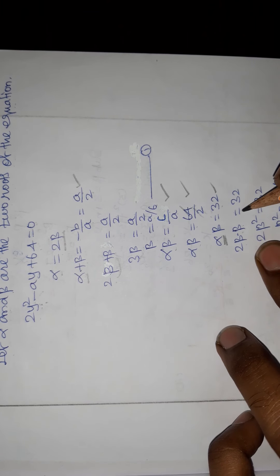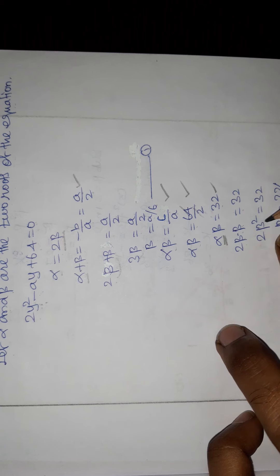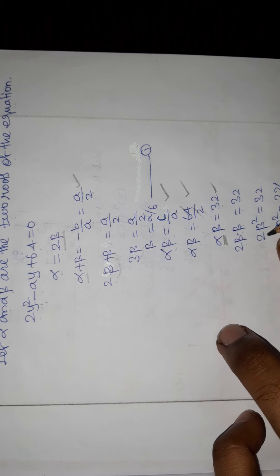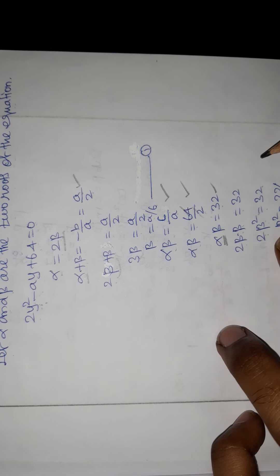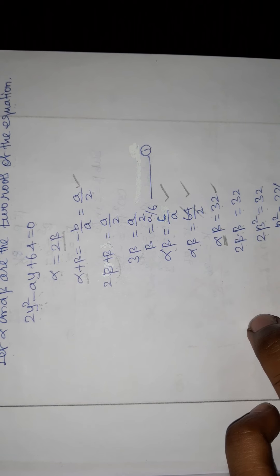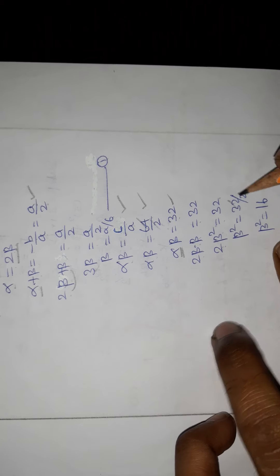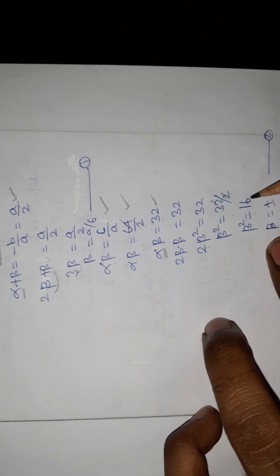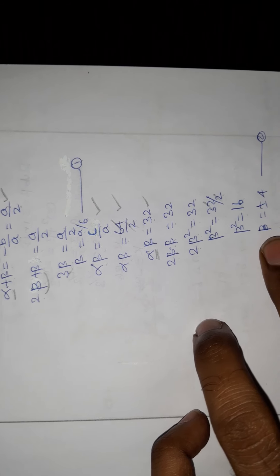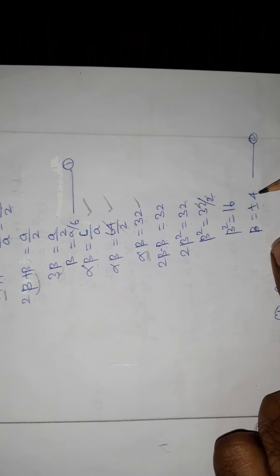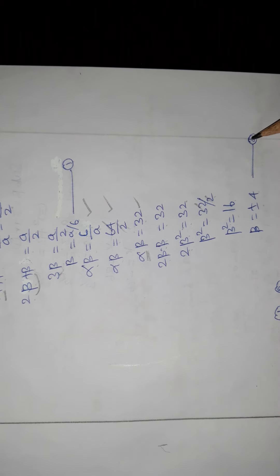Substituting alpha equals 2 beta: 2 beta times beta equals 32, so 2 beta² equals 32. Moving 2 to the right side: beta² equals 32 by 2, which gives beta² equals 16. So beta equals plus or minus 4. This is equation 2.